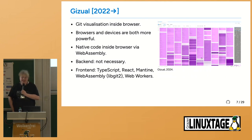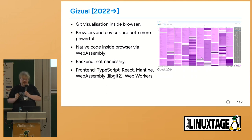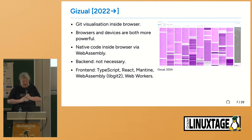Moving to now, a couple of years ago we started Gizul, trying to get the same kind of visualization to work purely inside the browser. And we're there. It's useful — not perfect, as you'll see a bit later. Using WebAssembly to run libgit2, and using a pool of web workers for efficiency, we're able to have a reasonably good repository visualization, and we don't need a back-end, which is a nice thing.